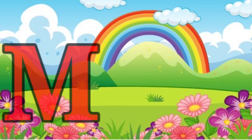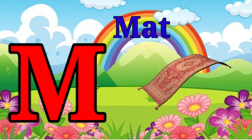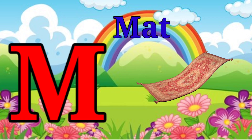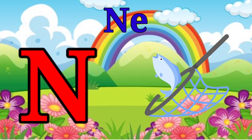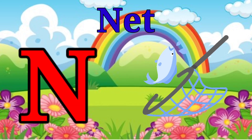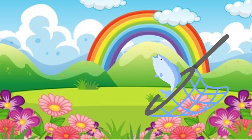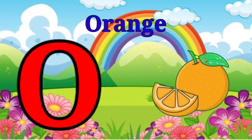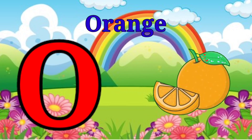M is for mat, m-m-mat. N is for net, n-n-net. O is for orange, o-o-orange.